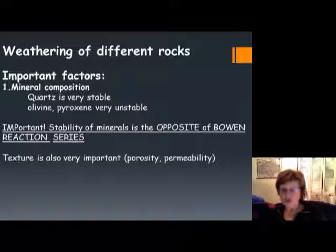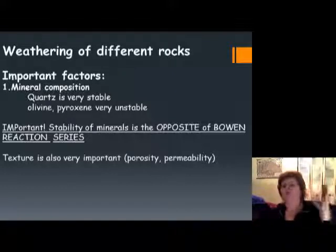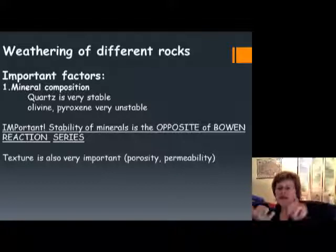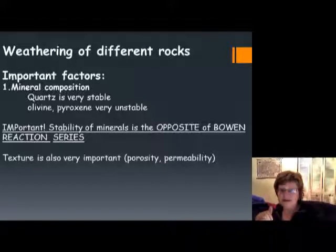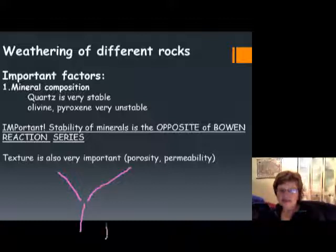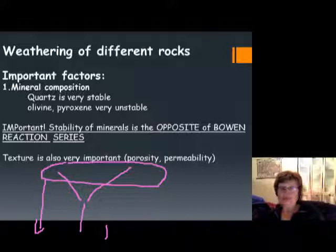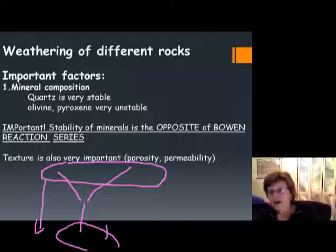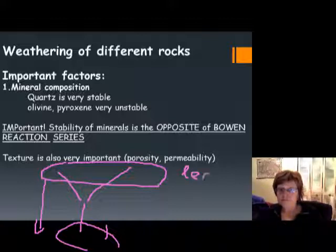Now we need to discuss what kinds of rocks produce what kinds of soil, which requires understanding how different rocks weather. Quartz is the most stable mineral, while olivine and pyroxene are the most unstable. Think of Bowen's Reaction Series — as you go down the series, minerals become more resistant to weathering. Olivine and calcium-rich minerals are least stable; at the beach you mostly see quartz and muscovite mica.